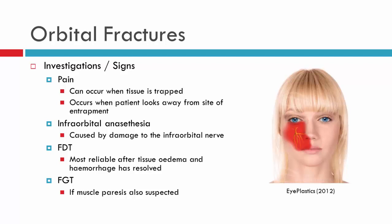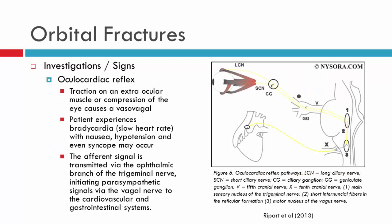With the forced generation test, you can sometimes identify a paresis from trauma, helping to distinguish whether a paresis is present. Also important to note is the ocular cardiac reflex. Some patients may have this in response to traction of an extraocular muscle or compression of the eye. The patient will have bradycardia — slowing of the heart rate — and may feel nauseous, experience syncope or fainting, and have hypotension. If a patient is complaining of these symptoms, you are looking at ocular cardiac reflex post-orbital fracture.